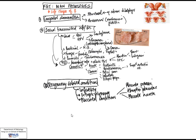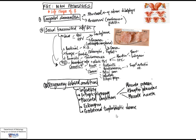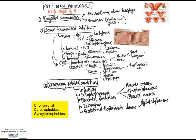Eclampsia is another important condition that can give rise to significant morbidity and mortality, both maternal and fetal. This is essentially hypertension occurring in the setting of pregnancy. Gestational trophoblastic disease is a group of neoplasms or tumors that arise in trophoblastic tissue — this means chorionic villi, cytotrophoblast, and syncytiotrophoblast, the placental tissue.